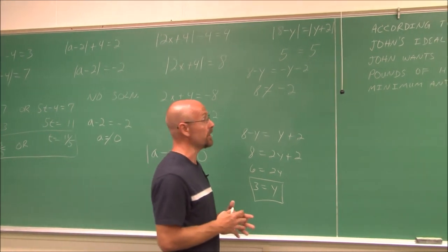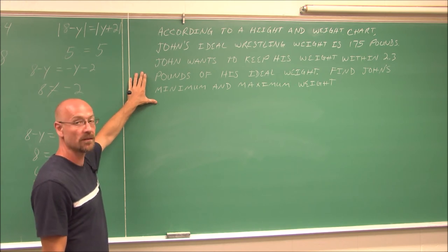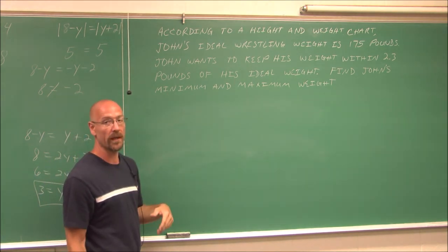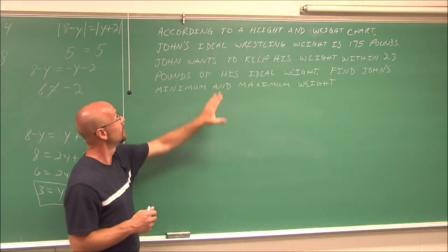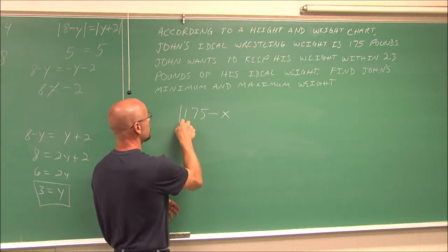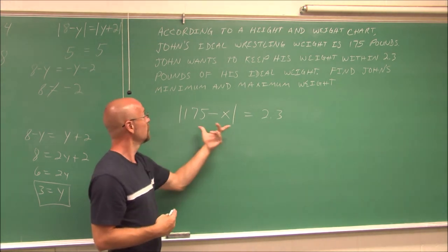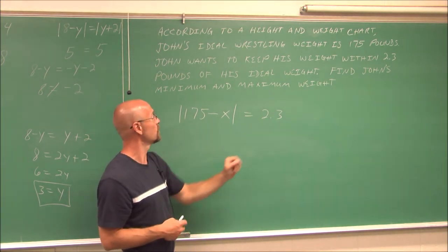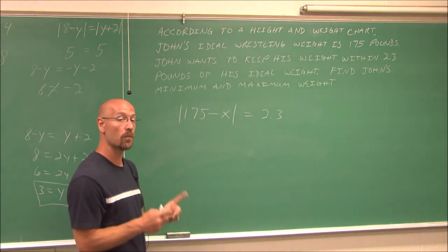Let's look at an application problem. According to a height and weight chart, John's ideal wrestling weight is 175 pounds. He wants to keep his weight within 2.3 pounds of his ideal weight. We can use an absolute value equation — the difference between his ideal weight and some other weight must be within 2.3 pounds, either positive or negative. So we write: the absolute value of 175 minus x equals 2.3.